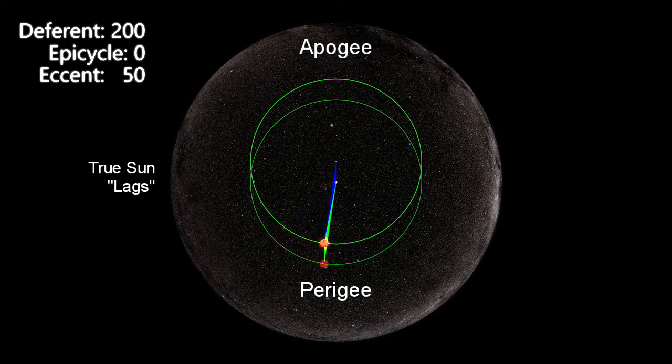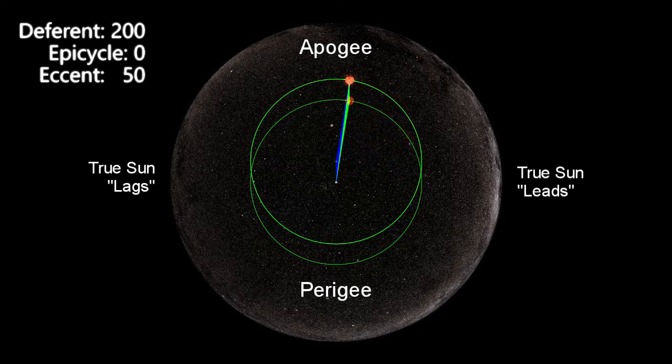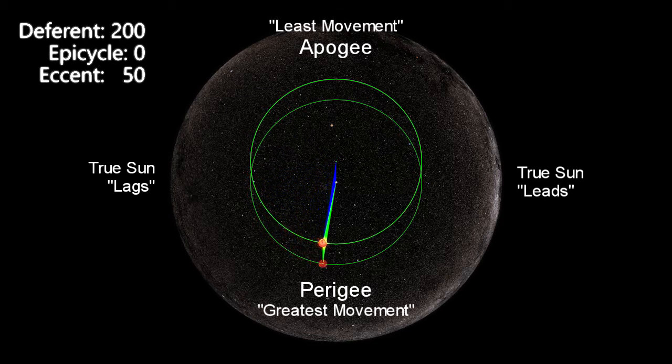Then, from the perigee to the apogee, the mean Sun falls behind the true Sun. Thus, the true Sun appears to speed up as it goes from apogee to perigee, showing the greatest change in angular distance over an equal period of time near the perigee.